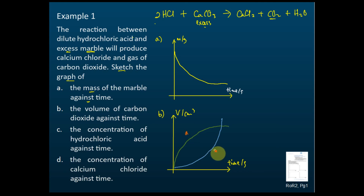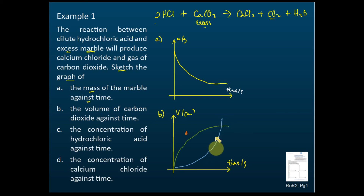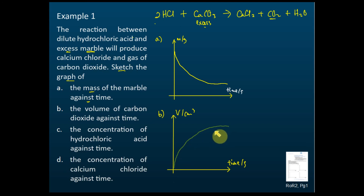The answer is A, not C. The gradient of curve A decreases over time, which means the rate of reaction decreases over time — that is correct. For curve C, the gradient increases over time: it starts flat then becomes steeper and steeper, which is incorrect. For curve A, it starts steep and becomes flatter and flatter. So the gradient must decrease over time, and therefore A is the correct answer for the volume of CO₂ against time.